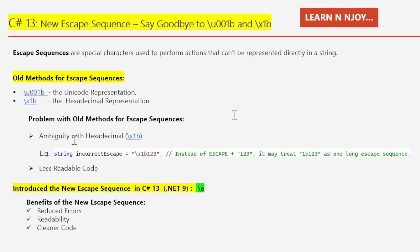The problems with old methods for escape sequences: Number one is ambiguity with hexadecimal. When using hexadecimal escape sequences, if you accidentally add extra valid hexadecimal digits after 1b — like \x1b123 — the escape sequence will read those digits as part of the sequence. This can unintentionally create a different escape sequence, leading to unexpected behavior or bugs. Number two is less readability. Developers need to remember the specific unicode or hex value, making the code more cryptic, especially for those unfamiliar with escape sequences.